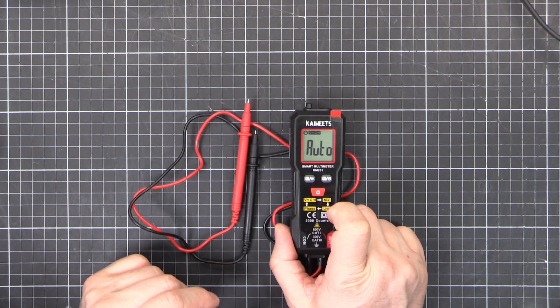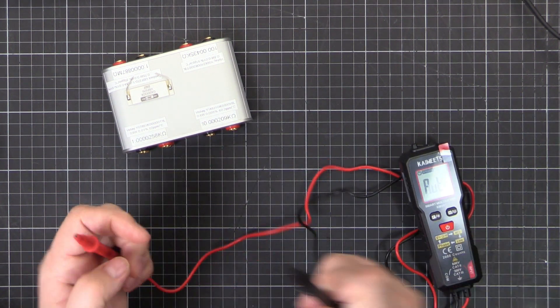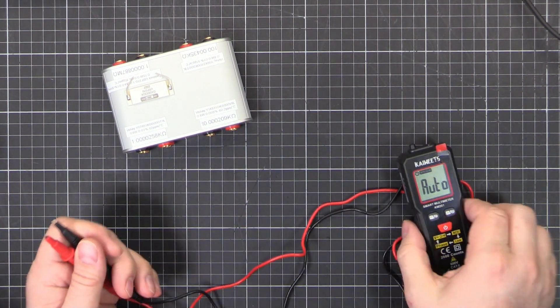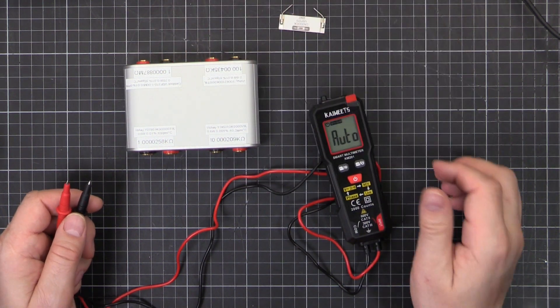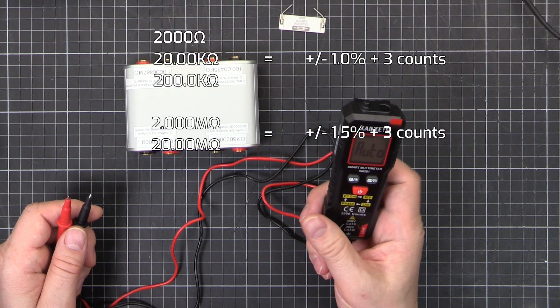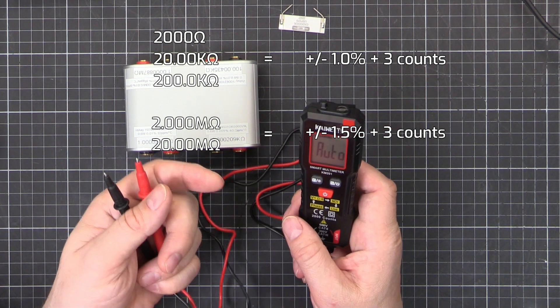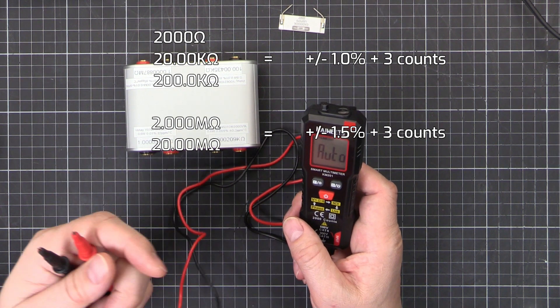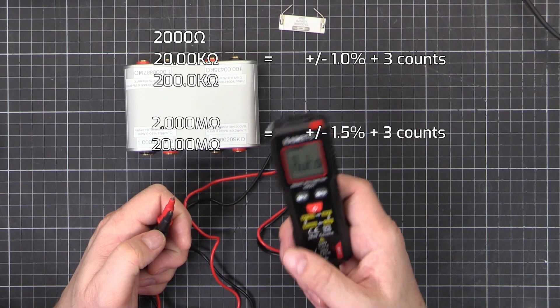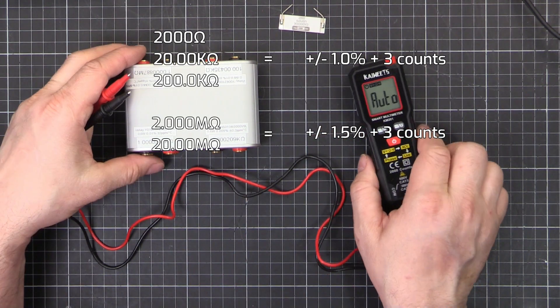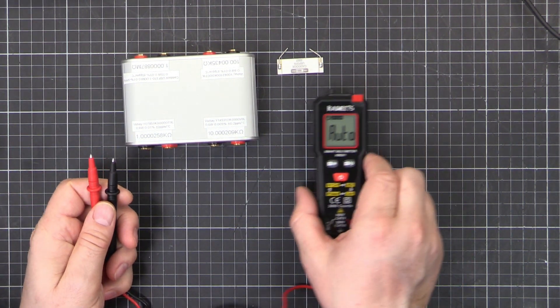But what we can do is we'll test the resistance. I've got a bunch of resistors here which I've tested on four wire resistance on my six and a half digit multimeter. And we can see if it comes in under tolerance. So the tolerances for the resistance is one percent plus three counts for the two hundred, two thousand ohms, two kilo ohms and two hundred kilo ohms. And then we're at up to one point five percent plus three counts for two meg and twenty meg. So these resistors are more accurate than what that can show.